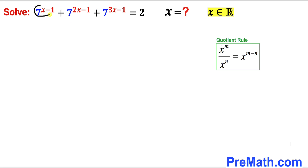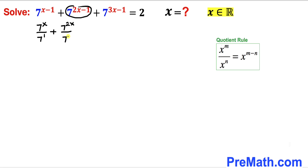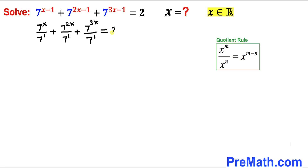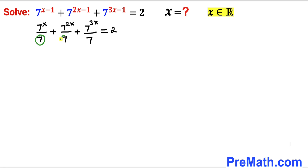So therefore this first term can be written as 7^x divided by 7^1, plus for the second term that is going to be 7^(2x) divided by 7^1, and plus finally the third term we can write as 7^(3x) divided by 7^1, equals 2 on the right hand side. Now 7^1 is the same as 7, so our denominators are going to be 7 across the board.